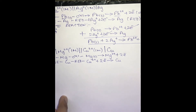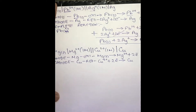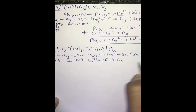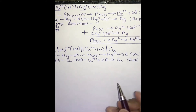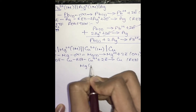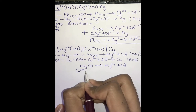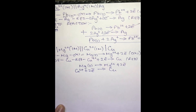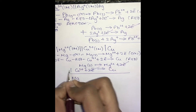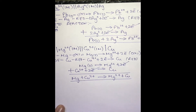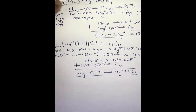The two electrons lost by Mg are taken by Cu²⁺ ions. The complete reaction is the sum of the oxidation and reduction reactions. Adding them: Mg (solid) + 2e⁻ and Cu²⁺ + 2e⁻ → Cu. The two electrons cancel, giving the complete cell reaction: Mg (solid) + Cu²⁺ → Mg²⁺ + Cu. Let's now understand one more question, which is a little bit tricky.